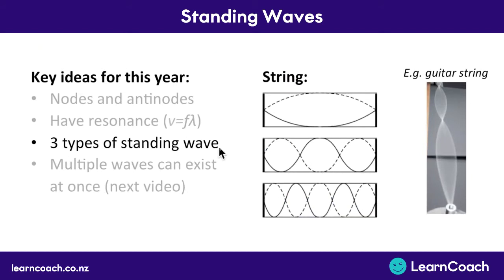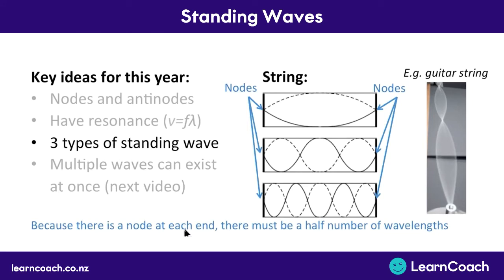Finally, we're going to look at three types of standing waves. The first is a string — the same as a rope, what we've been looking at. A string is attached at both ends so it has a node at both ends. You could have just a half-wavelength, which is the most basic wave and lowest frequency, or multiple half-wavelengths like three or five half-wavelengths. The key takeaway for a string is that it's fixed at both ends, giving nodes at each end, so there must be a half-number of wavelengths set up.